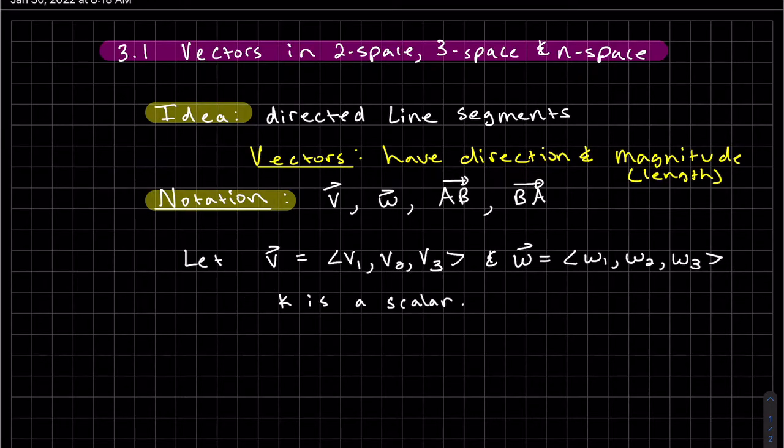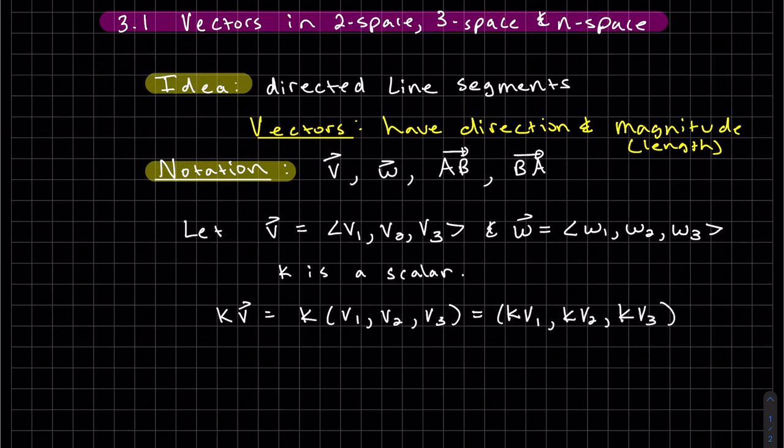So K is a scalar, which means it's just a constant. Just a note, some books use parentheses. So I'm going to kind of switch off here so you can know you can use either one. So that K can be distributed to every element in V.